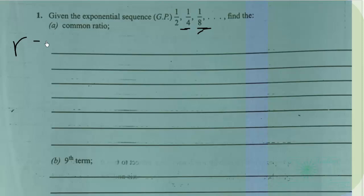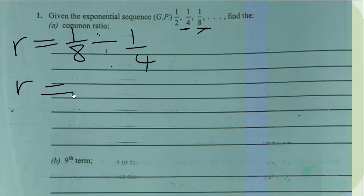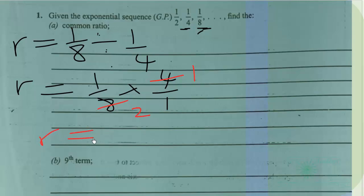Dividing 1/8 by 1/4 gives the common ratio R. You can also use 1/4 divided by 1/2 and get the same result. So R = (1/8) × (4/1). Simplifying: 4 goes into itself once and into 8 twice, giving us 1/2. Therefore the common ratio R = 1/2.